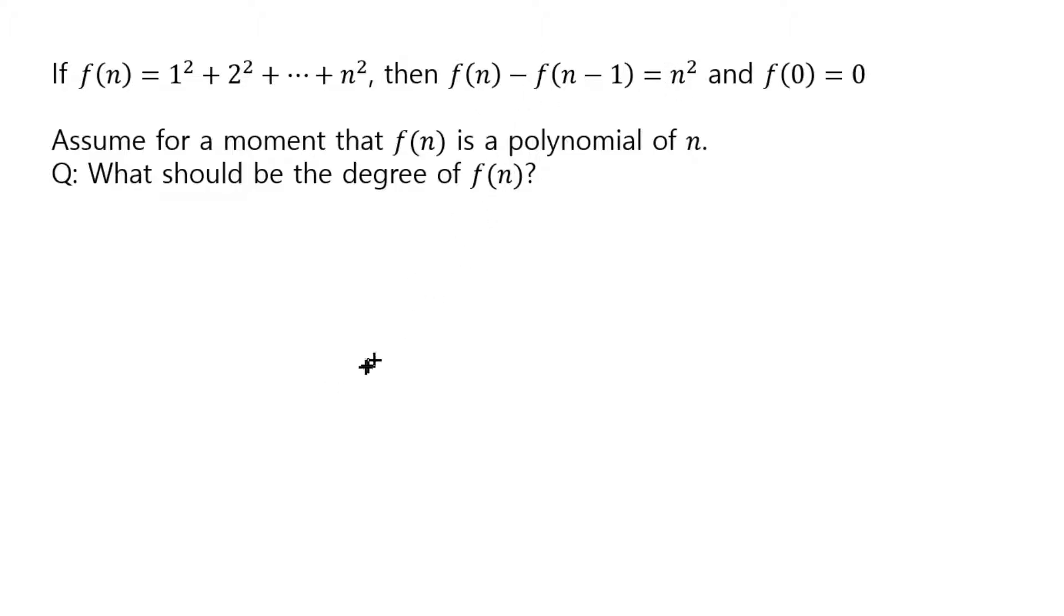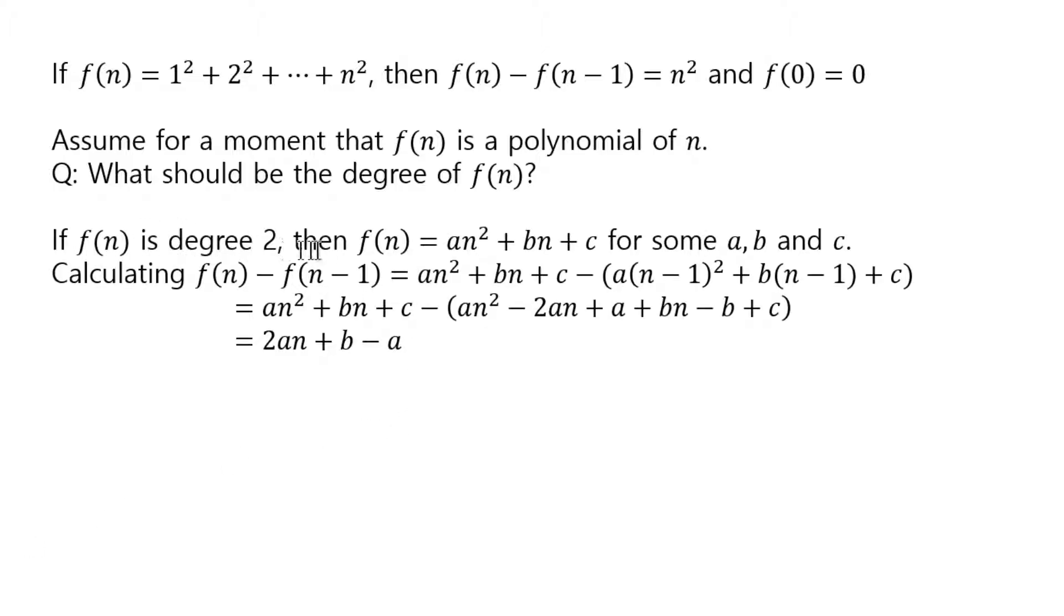why not make f(n) a degree 2 polynomial? So, in other words, if f(n) is degree 2, that means any degree 2 polynomial can be written in this form, right? And then you plug this in to calculate f(n) minus f(n-1), just like that, and you expand everything,